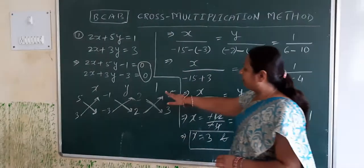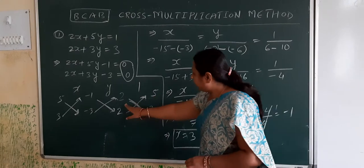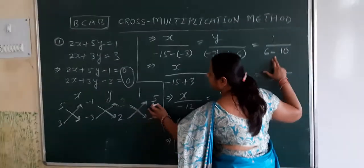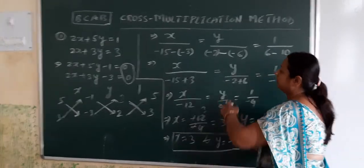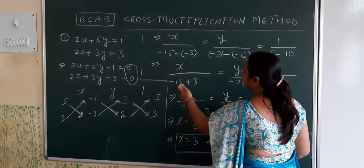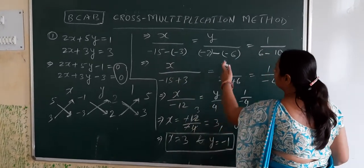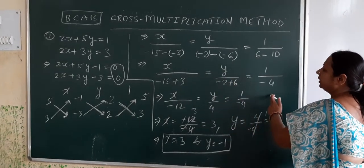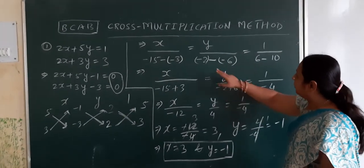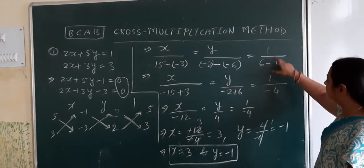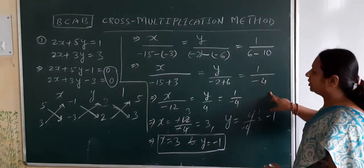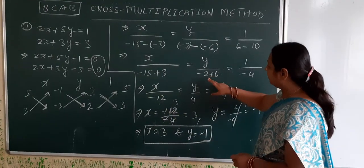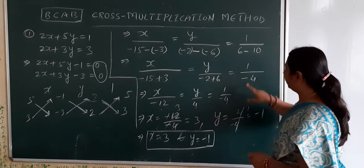And then we come to the last term, 1. Multiply 2 by 3 equals 6. Put minus sign, then 5 into 2 equals 10. Now solve it: x divided by minus 15 minus minus 3, equals y by minus 2 minus minus 6, equals 1 by 6 minus 10. This simplifies to x by minus 12, y by 4, and 1 by minus 4.